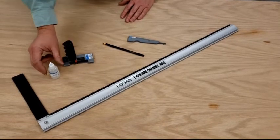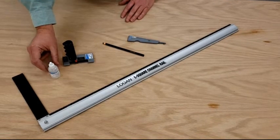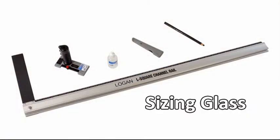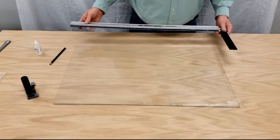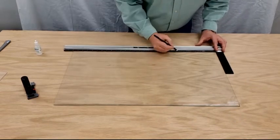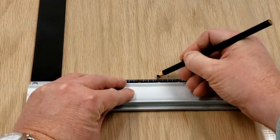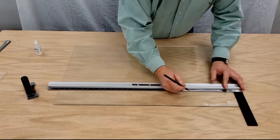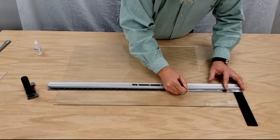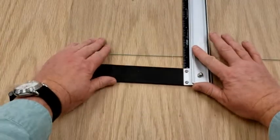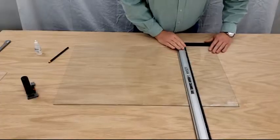To size glass, use the angle bar and the grease marking pencil to make reference marks on the glass. Now align the angle bar along the reference marks.